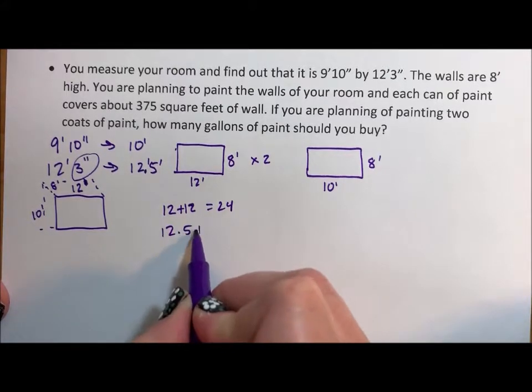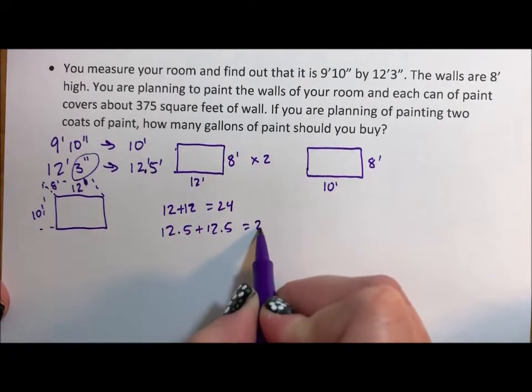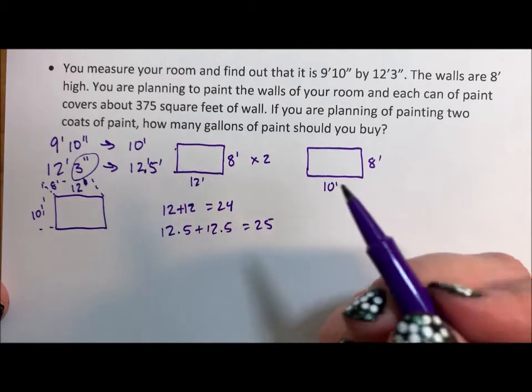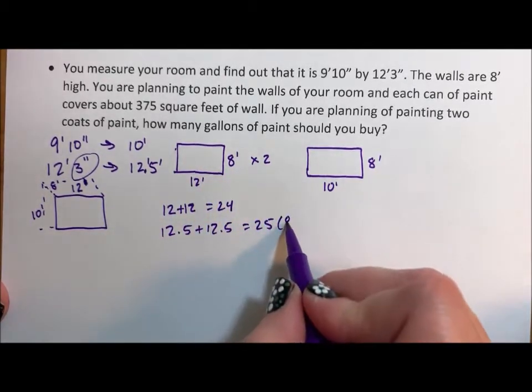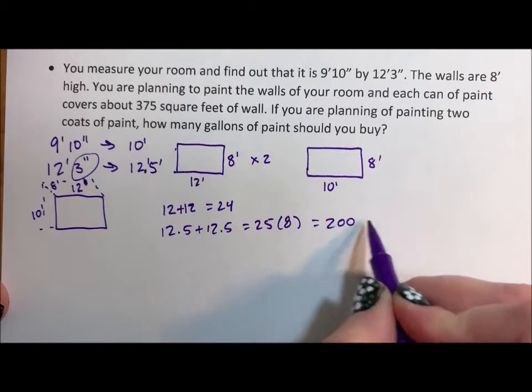Well, 12 and a half plus 12 and a half is 25. 25 for the two walls times 8 is 200 square feet.